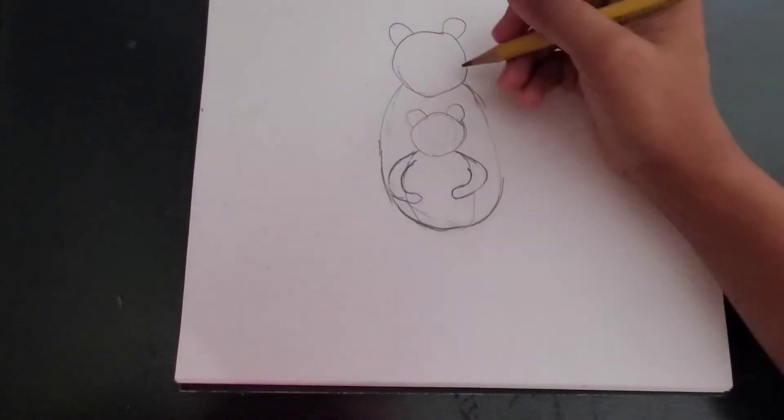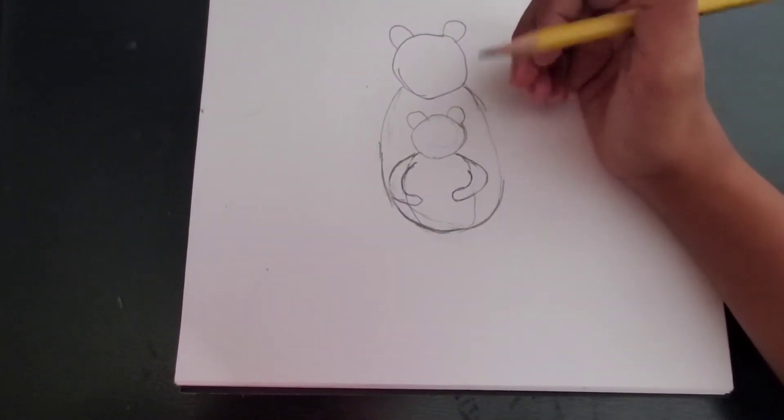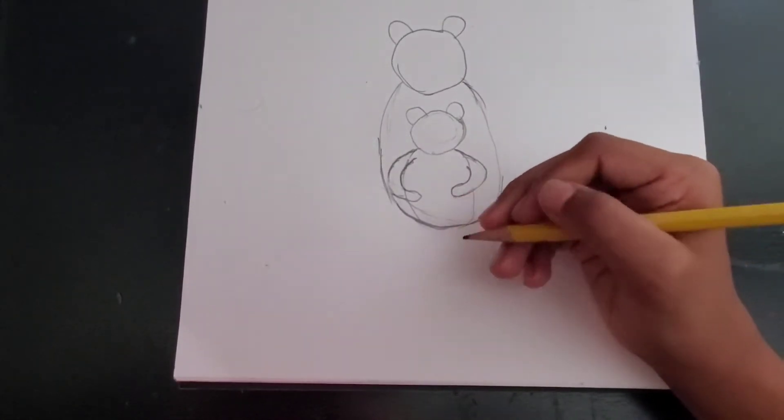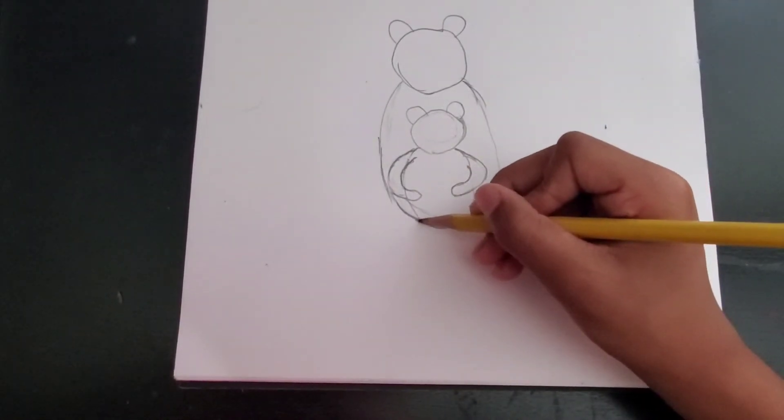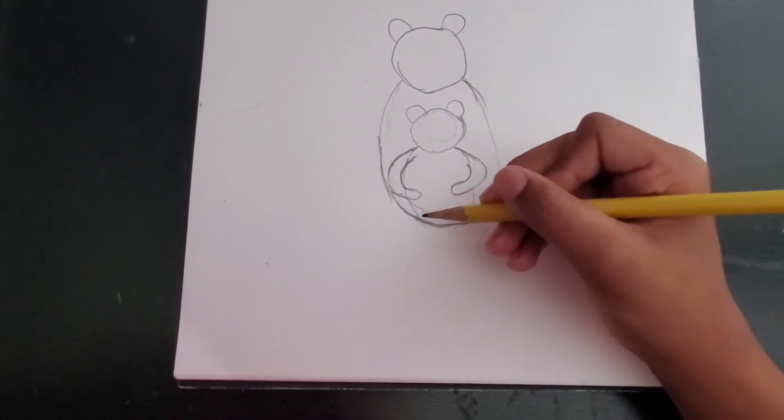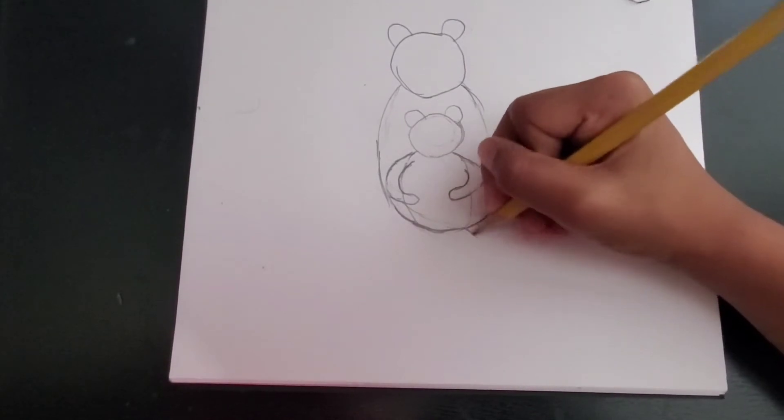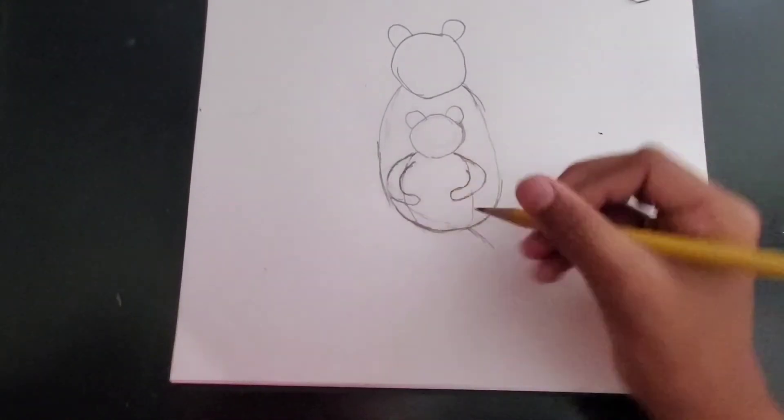So after the hands we go for the feet. So when you are making the feet, this is one mistake that everybody makes. Make sure that it looks like a bear's feet and not a chicken's feet. So make it round enough. So first make two lines that go either way. So he is sitting.